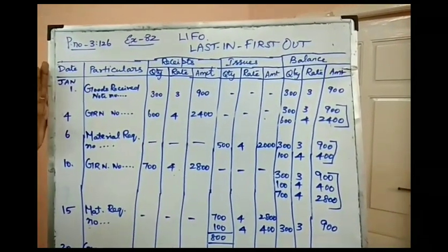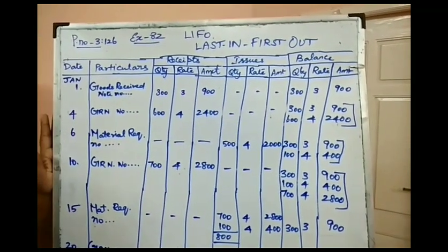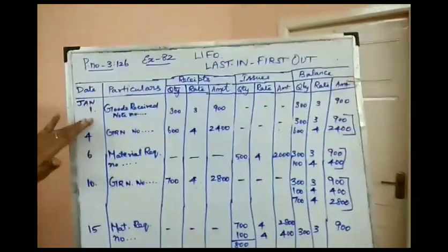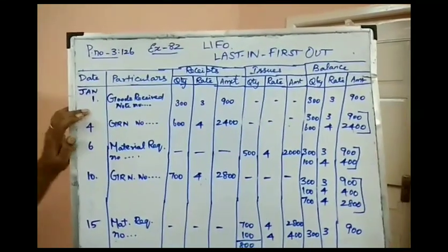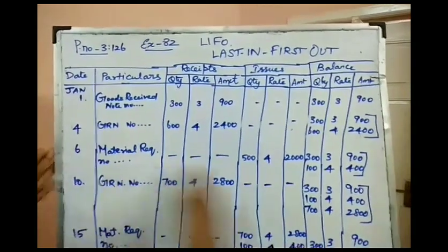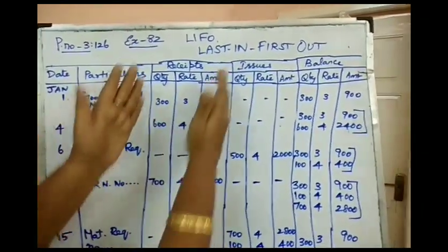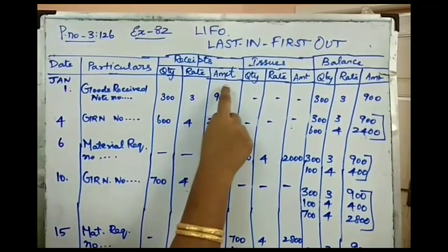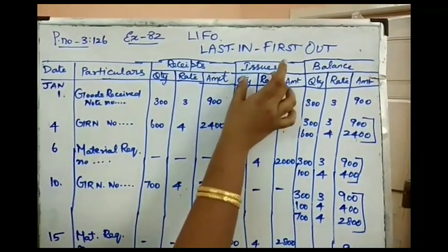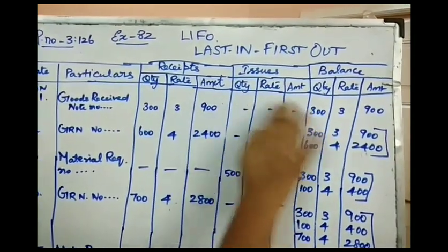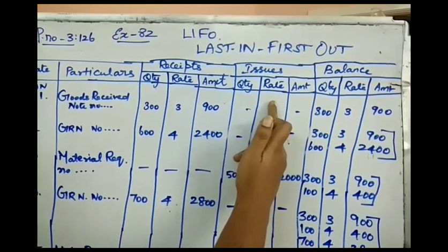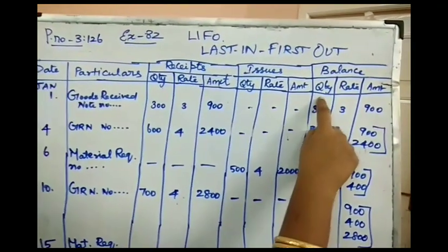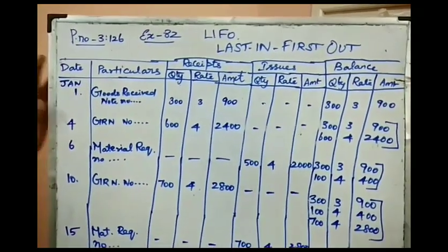This problem doesn't carry any opening stock, so we are starting directly with purchases and issues. The ledger has several columns: the Receipt column contains quantity in units, rate per unit, and total amount. The Issue column has the same sub-columns. The third column is the Balance column, which includes quantity in units, rate per unit, and amount in rupees.